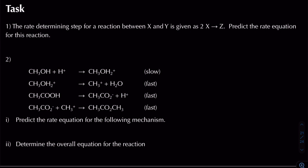First question: the rate determining step for a reaction between X and Y is given as 2X → Z. Predict the rate equation for this reaction. Remember, the reactants in the rate determining step — the slow step of the mechanism — are what we expect to find in the rate equation. So we expect: rate = k[X]². Only when dealing with the rate determining step can we assume that the stoichiometry of 2 gives order 2.